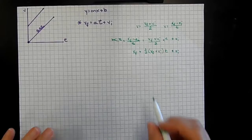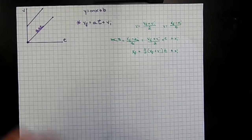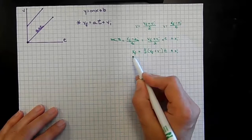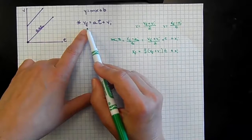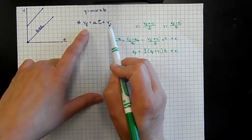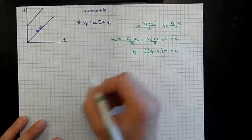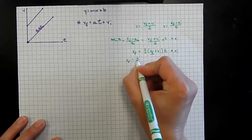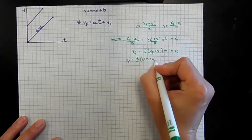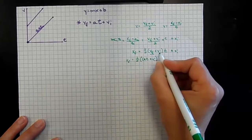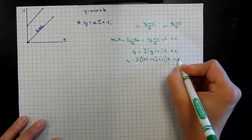That might not look much better — we have a lot of terms. Our goal is to express final position in terms of acceleration. From our first equation, final velocity equals acceleration times time plus initial velocity. If we substitute that expression in for final velocity here, we get: final position equals one-half of the quantity (acceleration times time plus initial velocity, plus initial velocity) all times time, plus initial position.